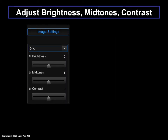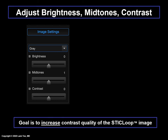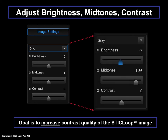The goal is to increase the contrast quality of the STICLoop image so that the marking process is easier. Here, the brightness has been decreased to negative 7, the mid-tones increased to 1.36, and the contrast remains at 0.